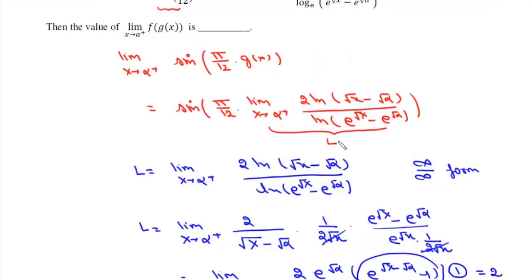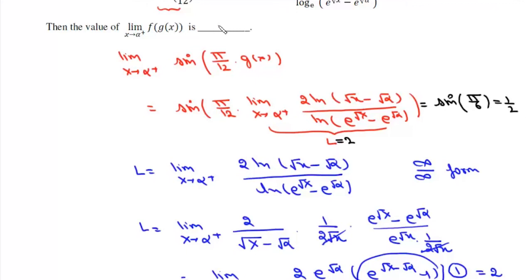Now putting the value of L as 2, the expression becomes sine of pi over 12 times 2, which is sine of pi over 6, and sine of pi over 6 is 1 over 2. So the answer to this limit is 0.5.